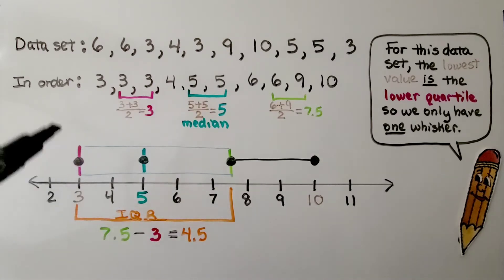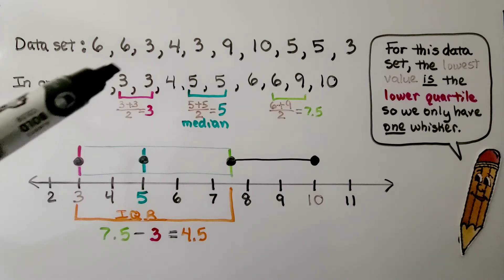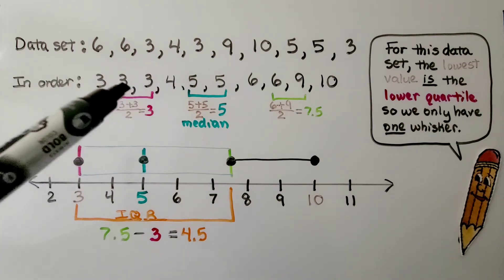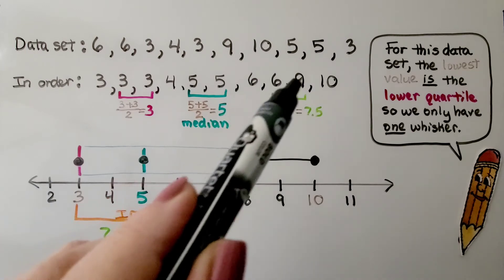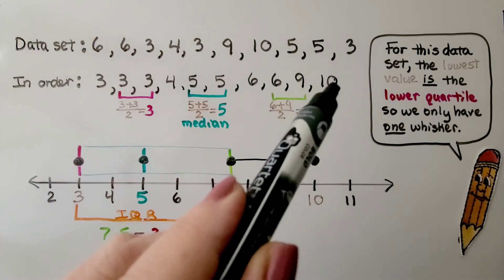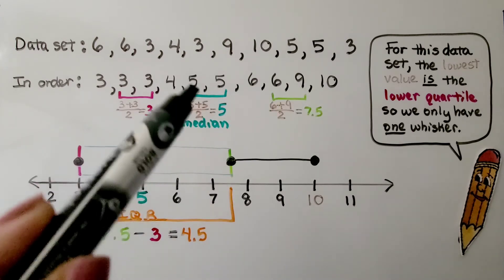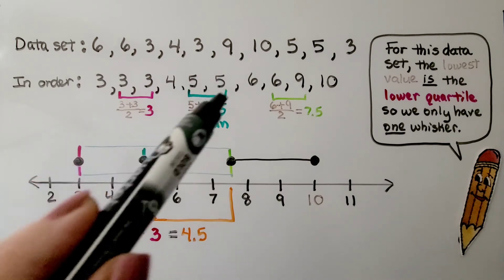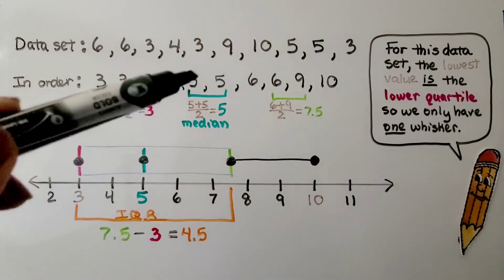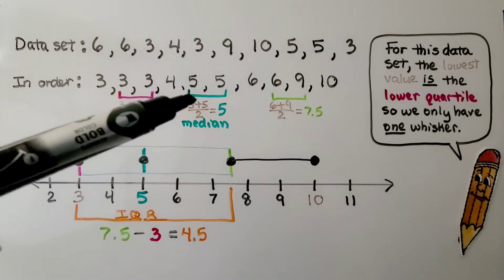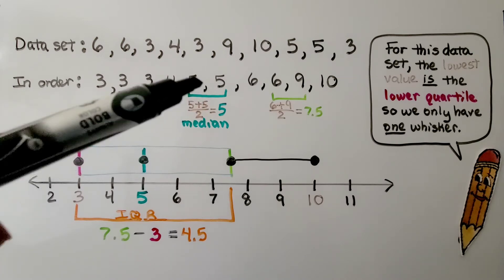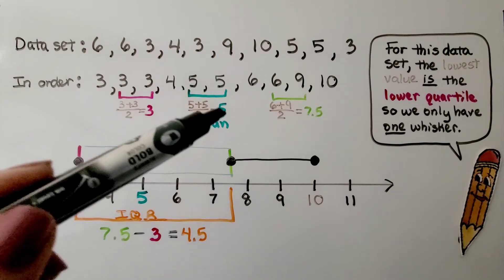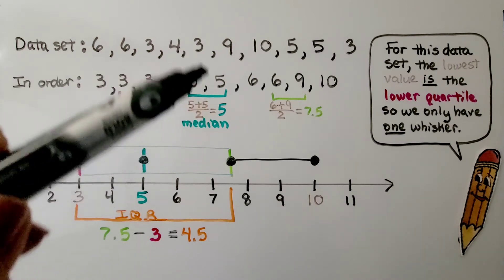If you look, we have 1, 2, 3, 4 numbers on the left side, and 1, 2, 3, 4 numbers on the right side. So these two middle numbers help us find the median. We find the average: 5 plus 5 is 10, divided by 2, gives us 5. So the median is 5.